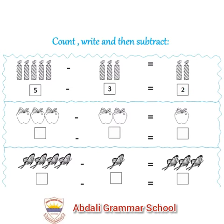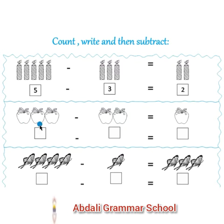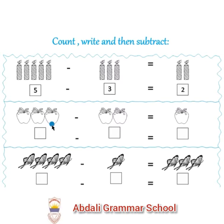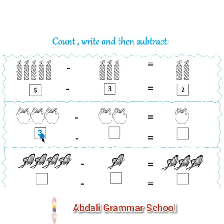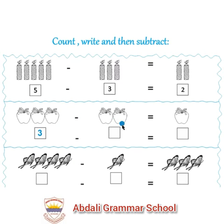Next question. First count apples. 1, 2, 3. Here you write 3. Minus, next, 1, 2. Here we write 2.